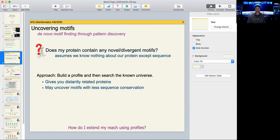So what do we want to do? Question we might ask is, I have a protein sequence. Does it contain any motifs? All I have is my sequence at the moment. I have no other information about it. One approach we might take is build a profile, build a pattern, and then search the known universe.